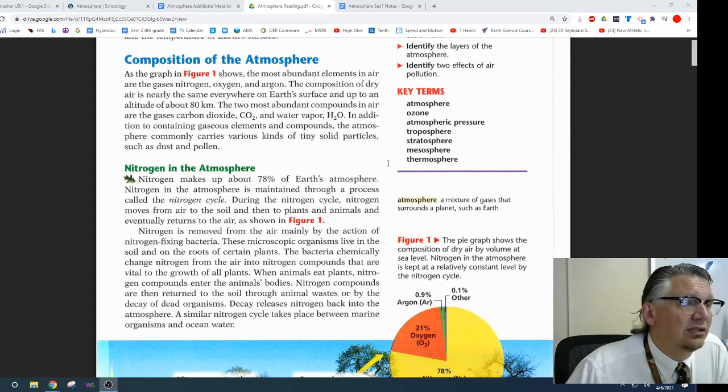Nitrogen makes up about 78% of Earth's atmosphere. Nitrogen in the atmosphere is maintained through a process called the nitrogen cycle. During the nitrogen cycle, nitrogen moves from the air to the soil, then to plants and animals, and eventually returns to the air, as shown in Figure 1.